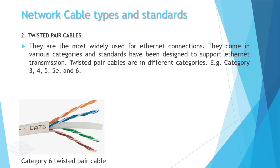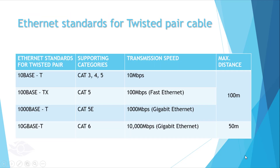Twisted pair cables come in different categories: Category 3, 4, 5, 5E, and 6. Category 3, 4, and 5 support a standard known as 10Base-T, where T means twisted pair, allowing data transmission at 10Mbps. Category 5 also supports the 100Base-TX standard, which allows a transmission speed of up to 100Mbps. Category 5E supports 1000Base-T, allowing up to 1000Mbps. Cables supporting 100Mbps are said to support fast ethernet, and cables allowing 1000Mbps or more support gigabit ethernet.